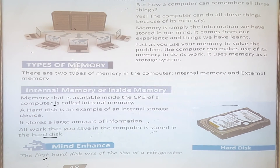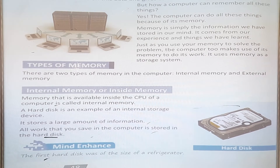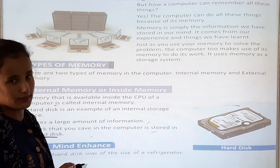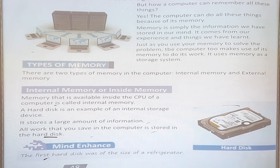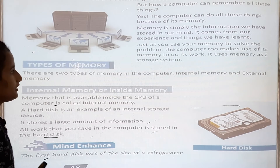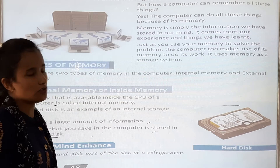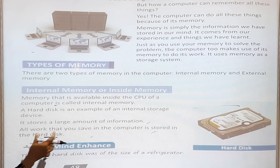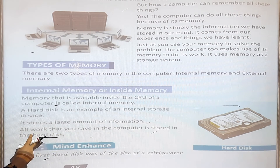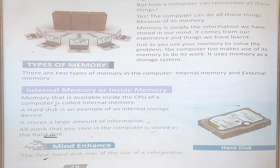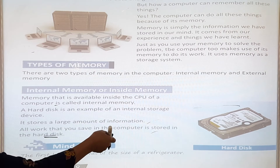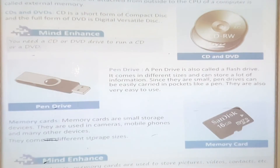The hard disk stores a large amount of information. All the work that you save on a computer — pictures, sounds, music — is stored on the hard disk. For example, when you draw something or save any file, it is stored on the hard disk. Interestingly, the first hard disk was the size of a refrigerator.